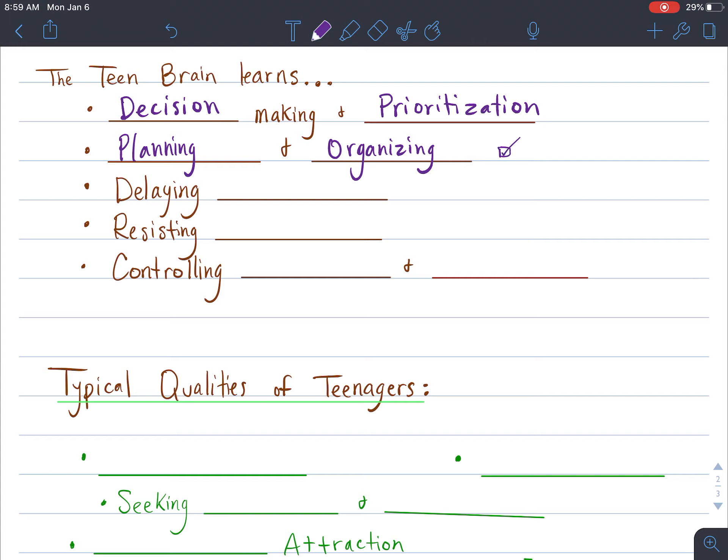Another thing teens are learning is to delay gratification. So maybe like saving up your money when you get paid instead of just spending on some candy, you might save it up so you can buy something cooler like a new skateboard or something.